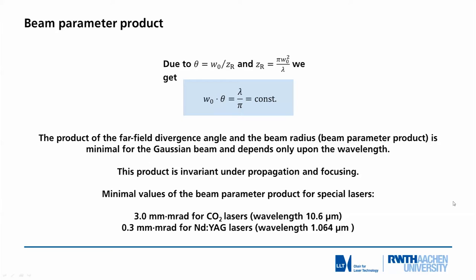If we calculate the values, which depend only on the wavelength, we end up with a value of 3 mm·mrad for CO₂ lasers at wavelength 10.6 μm. Correspondingly, because it depends only on the wavelength, one-tenth of that value for a neodymium YAG laser, which has a wavelength of only 1 micron. So the value for the YAG laser is 0.3 mm·mrad. The dimension is explained by the fact that the mm stands for the beam waist and the milliradians for the far field divergence.